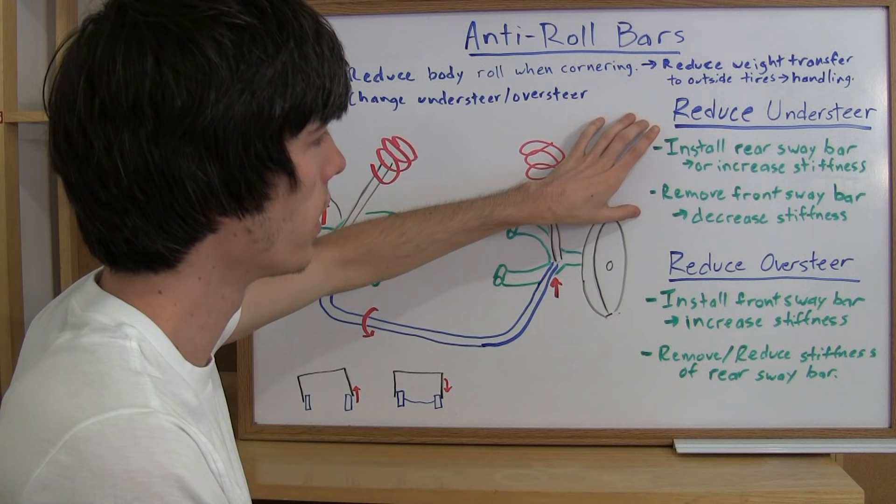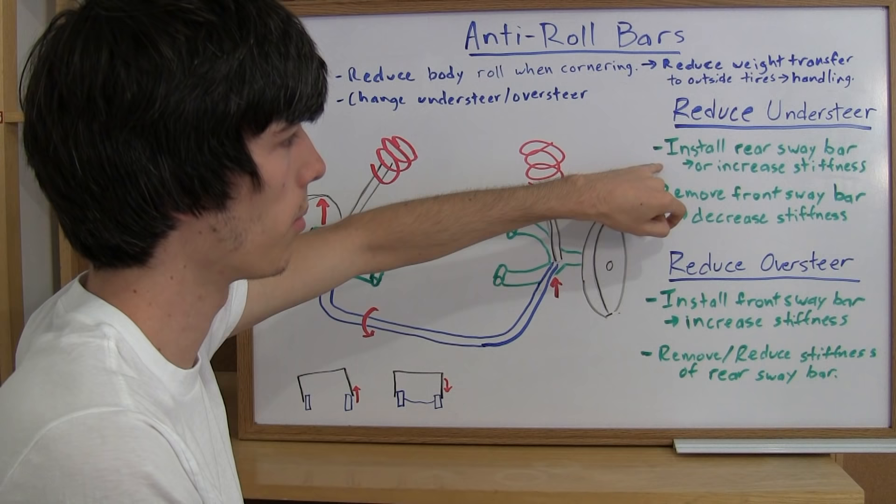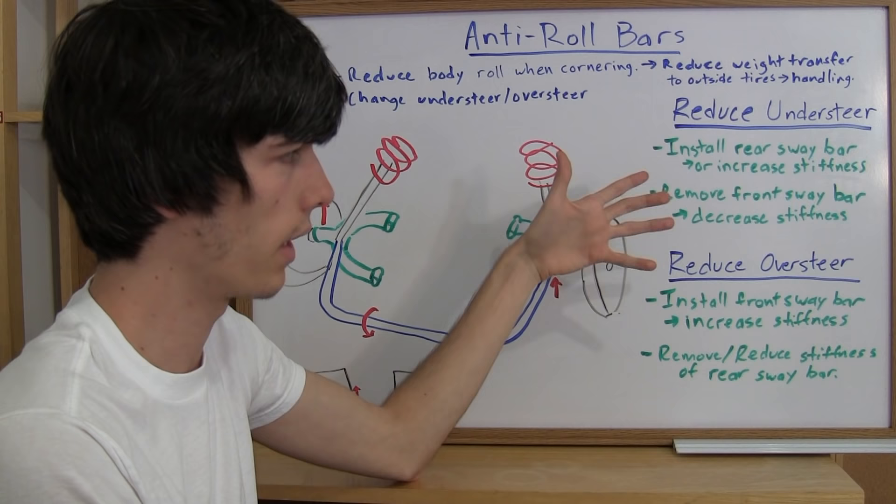So what you want to do is if you're trying to reduce the understeer of your car, you can either install a rear sway bar or increase the stiffness of the sway bar that is already there by getting either a stiffer sway bar or perhaps it's an adjustable one.